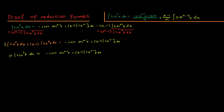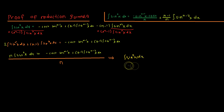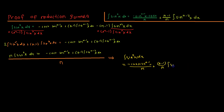The final step is dividing through by n. Doing this, we arrive at the final proof: the integral of sine of x to the power of n dx equals negative cos x times sine of x to the power of n minus 1 over n, plus n minus 1 over n multiplied by the integral of sine of x to the power of n minus 2. And that's it — thanks for watching.